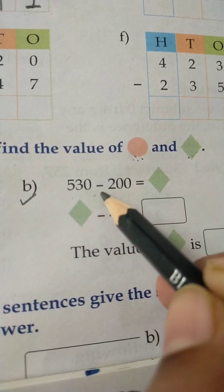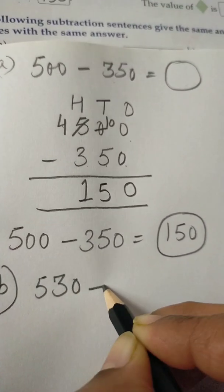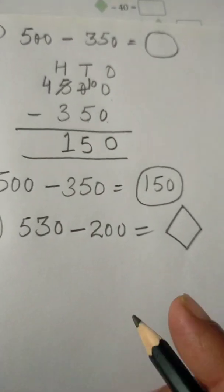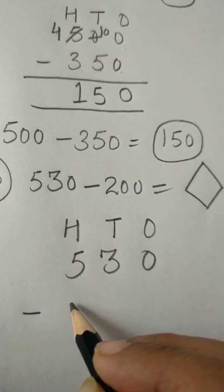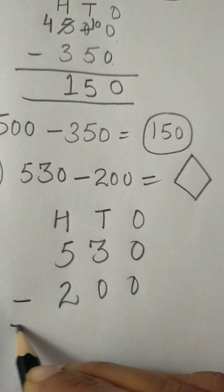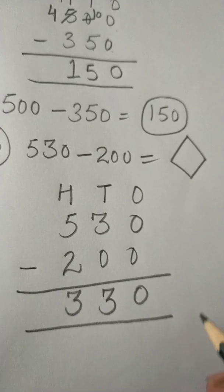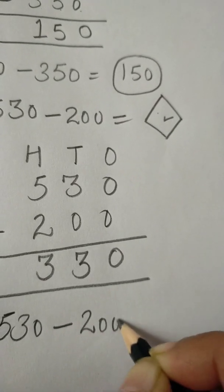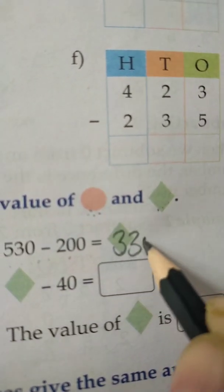530 minus 200 — ones, tens, hundreds: 530 minus 200. Here 0, here 3, and here again 3 — so we got 330. We write 330 in this box. So the value of the green box is 330.